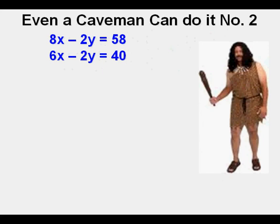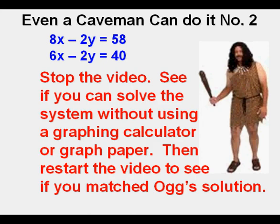We have time for one more system to solve. We have 8x minus 2y equals 58, and 6x minus 2y equals 40. You try it. Stop the video. See if you can solve the system without using a calculator or a graph paper. Then, restart the video to see if you matched Aug's solution.